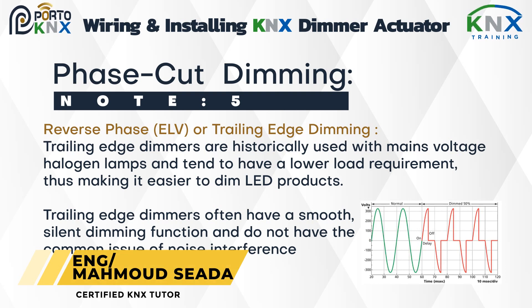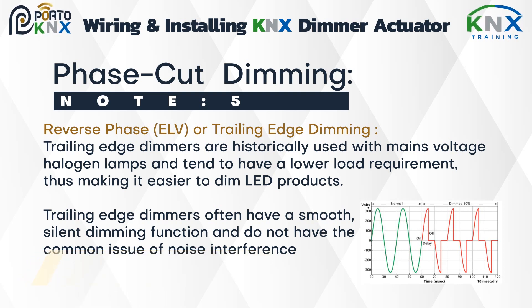The second type is reverse phase, also called ELV or trailing edge dimming. Trailing edge dimmers are historically used with mains voltage halogen lamps and tend to have a lower load requirement, making it easier to dim LED products. They often provide smooth, silent dimming and do not have the common issue of noise interference.